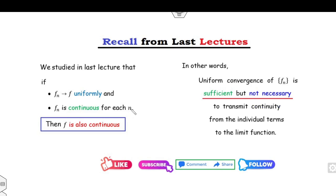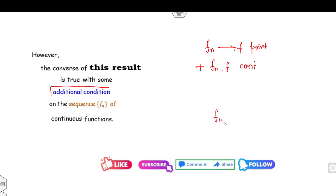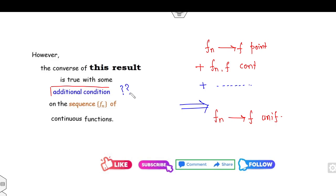Since the converse is not true, we have to think about some additional conditions apart from fn converging to f pointwise, plus fn and f being continuous, to conclude that fn converges to f uniformly. So we need an additional condition to imply uniform convergence.